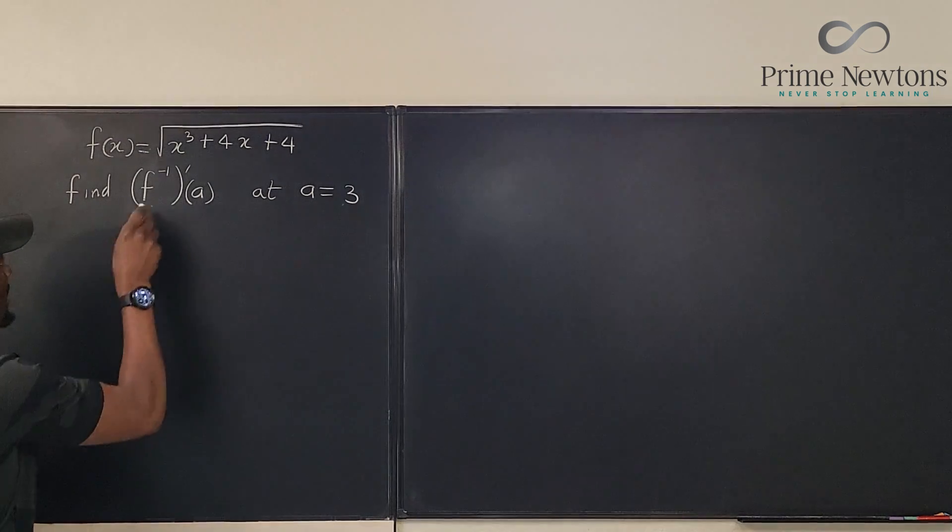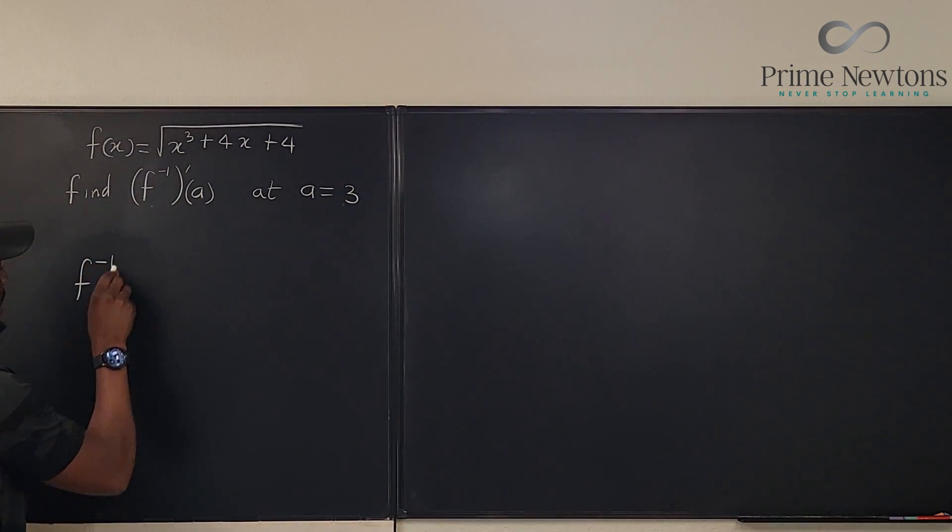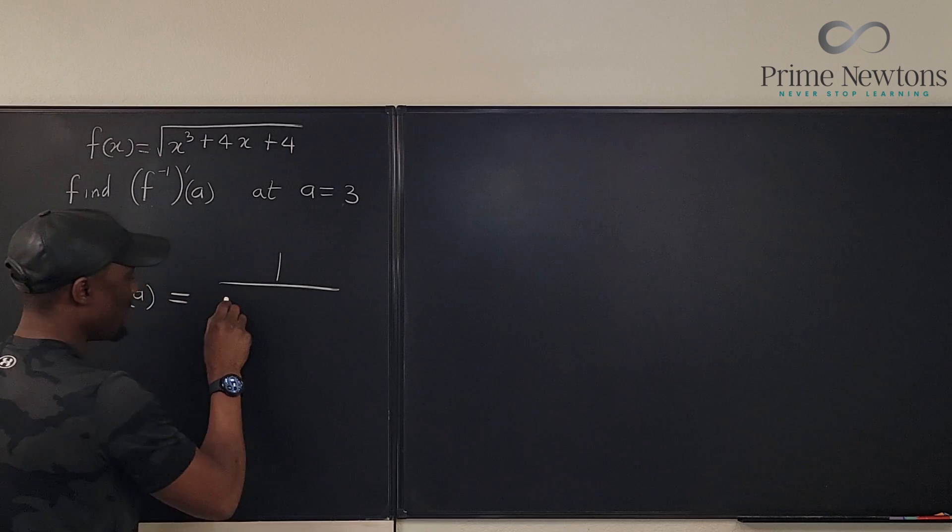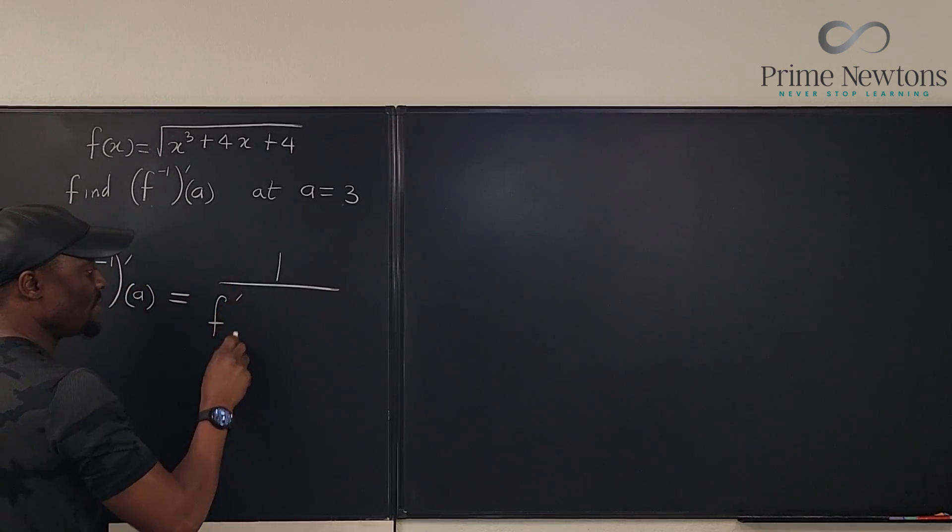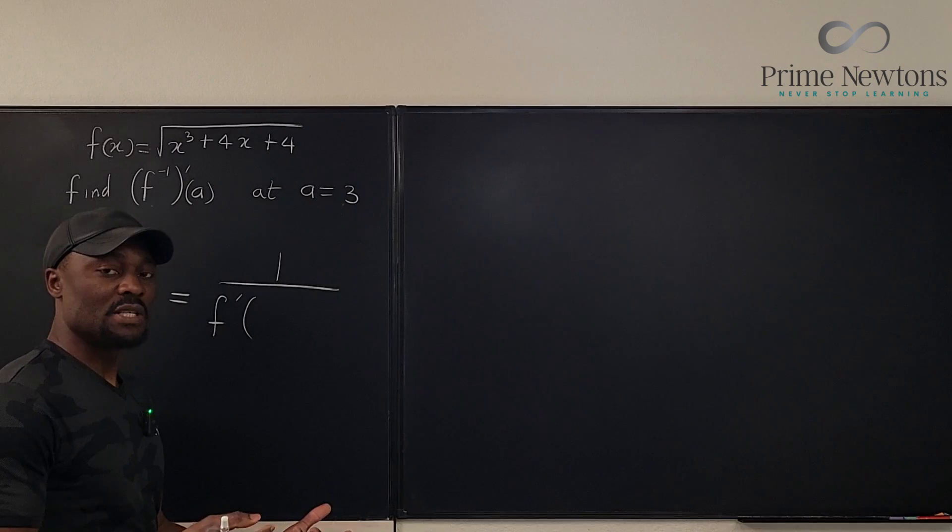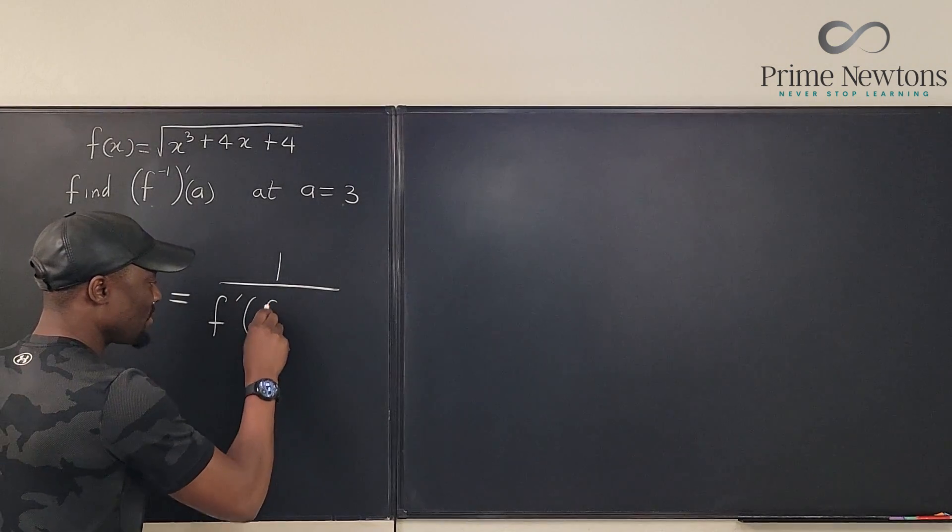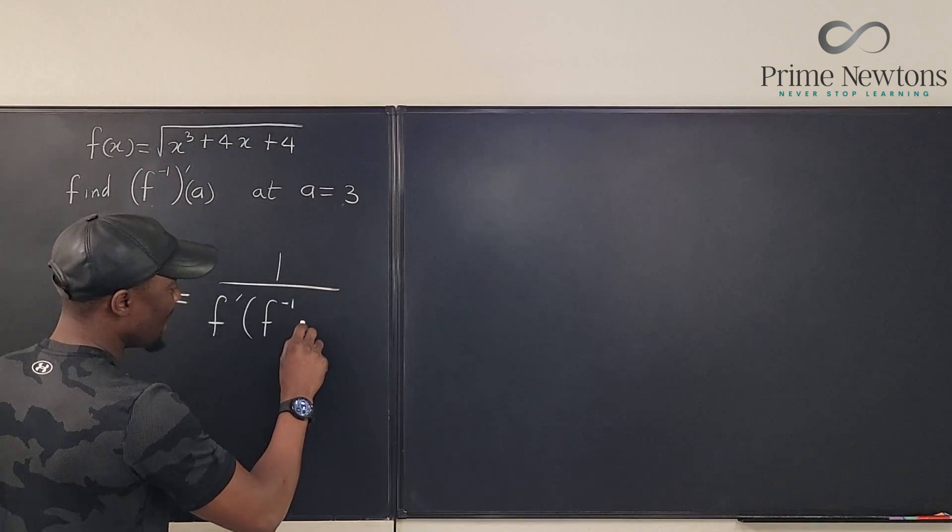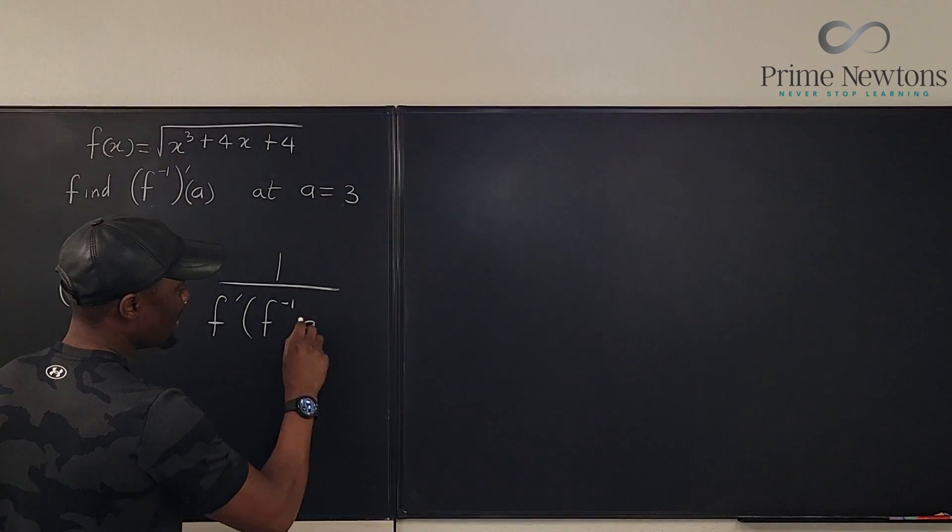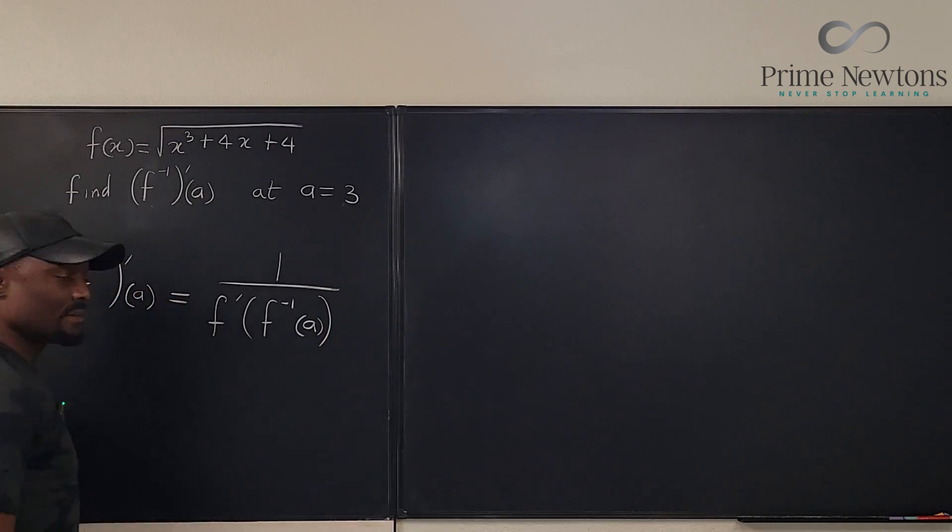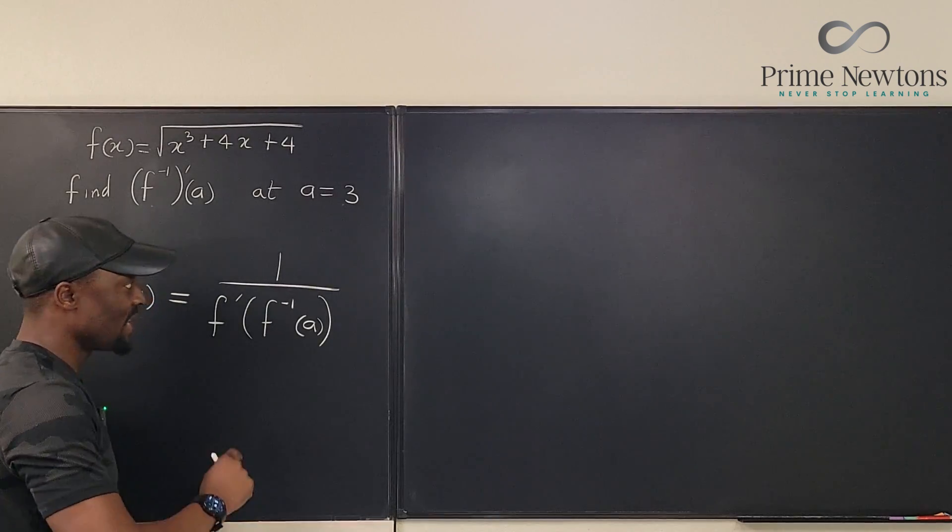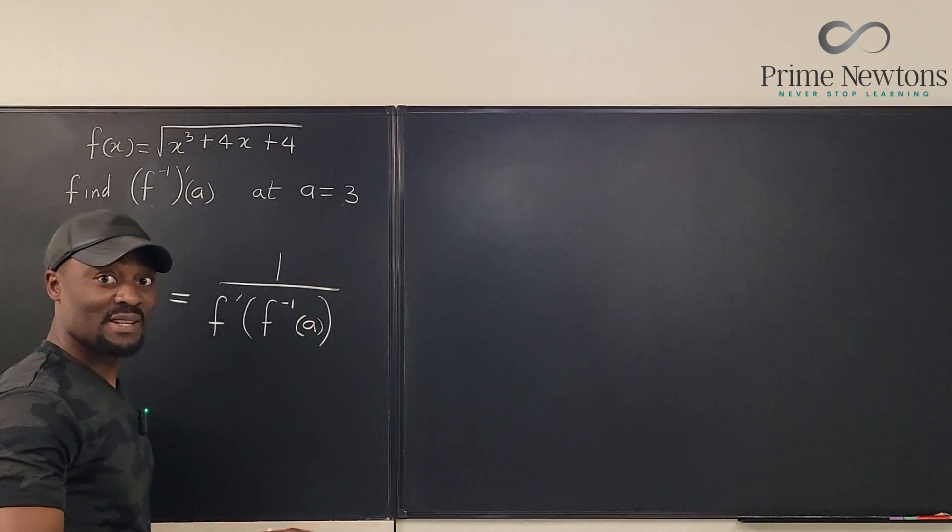Let's just write it. We know that if you want to find the derivative of the inverse of a function at a given point a, it is basically the reciprocal of the derivative of the function itself, the original function evaluated at a point. Now, how do we get that point? You just have to say, what did I plug into the original function to give me this A? So remember, this is a number, not a function.